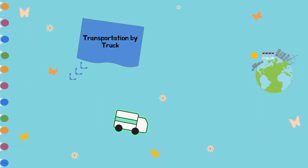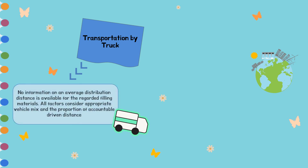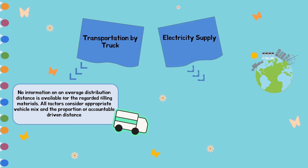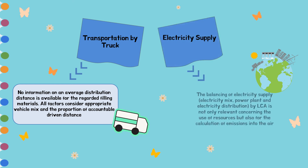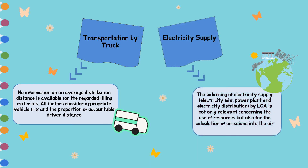Transportation by truck: no information on an average distribution distance is available for the regarded filling materials. All factors consider an appropriate vehicle mix and the proportion of a countable driven distance. Electricity supply: the balancing of electricity supply, electricity mix, power plant, and electricity distribution by LCA is relevant not only for the use of resources but also for the calculation of emissions into the air.